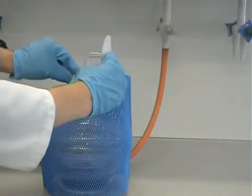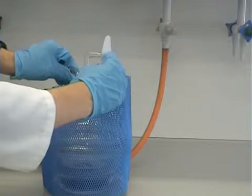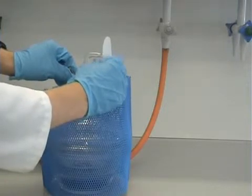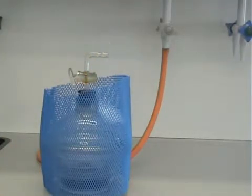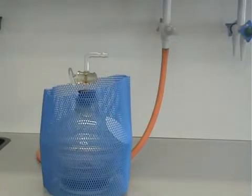To open the desiccator, place a piece of filter paper against the top, and slowly open the desiccator tap. The filter paper should stick, and then when the pressures have equalized, it should fall off.